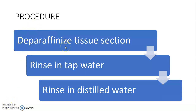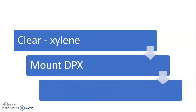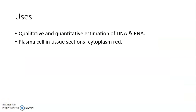Procedure: first, de-paraffinize the tissue section and rinse it in tap water, then in distilled water. After rinsing in distilled water, stain with the methyl green pyronin stain for at least 2 to 7 minutes at room temperature. Then dip the slide 1 to 2 times each in 2 changes of distilled water. Then dehydrate with alcohol, clear with xylene, and mount with DPX. Examine under the microscope. The uses of this technique include qualitative and quantitative estimation of DNA and RNA.